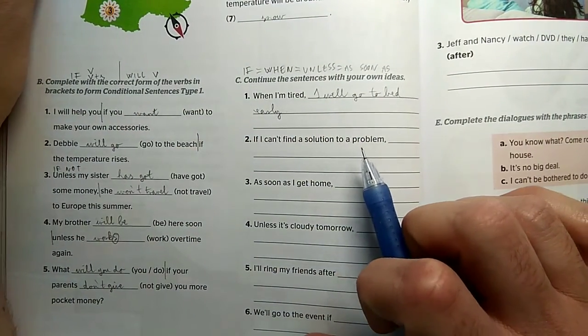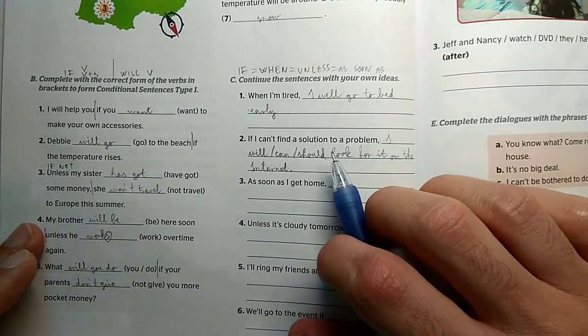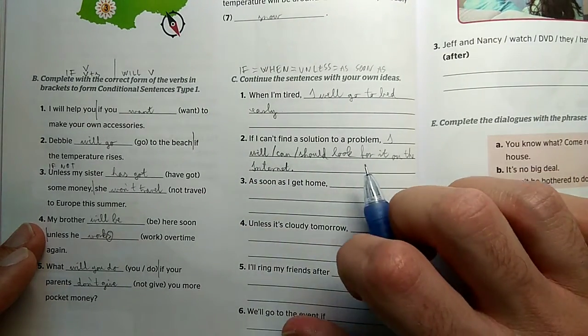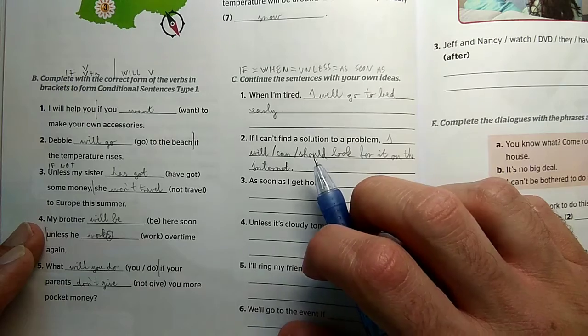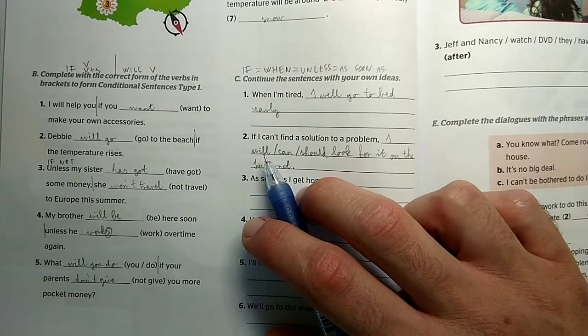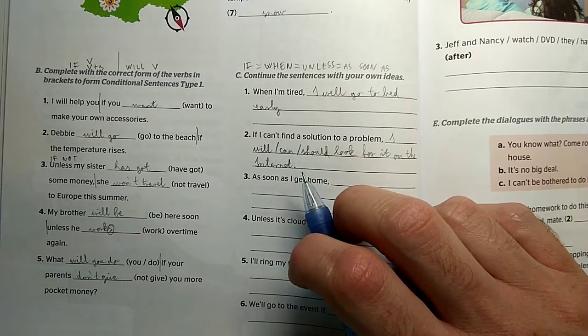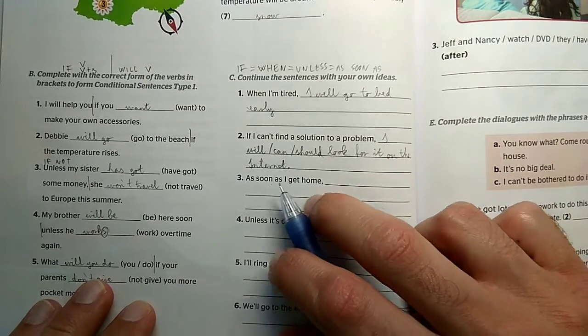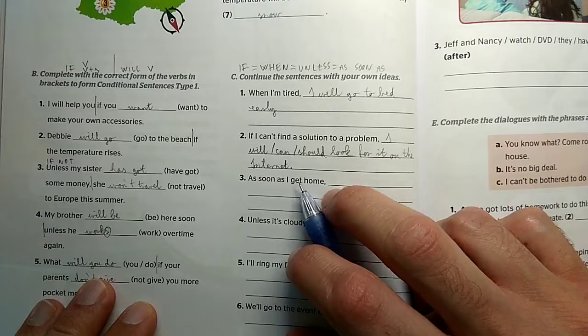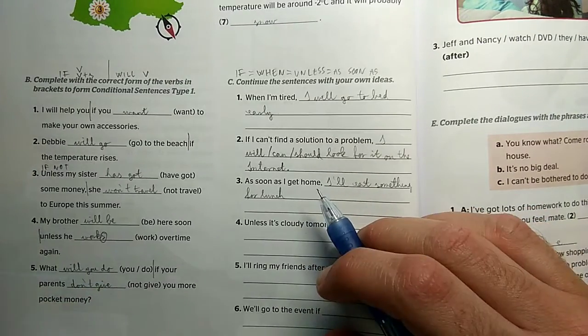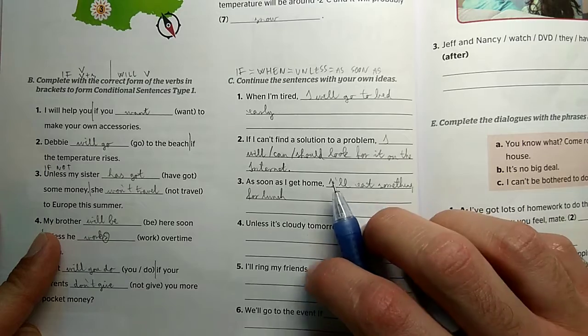So I'll choose the example that when I'm tired, I will go to bed early. I'll go to bed early when I'm tired. And notice that this sentence also translates to future but we still use present because of the mandatory if structure. If I can't find a solution to a problem, I will look for it on the internet, I can look for it, I should look for it, I need to, I must, I may, I might look for it on the internet. We also discussed that instead of will you can use other types of auxiliaries. This is still a conditional if sentence. As soon as I get home, I'll eat something for lunch. You don't have to use will in long form, you can use the short form too.